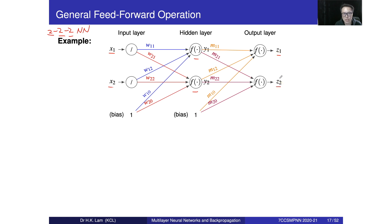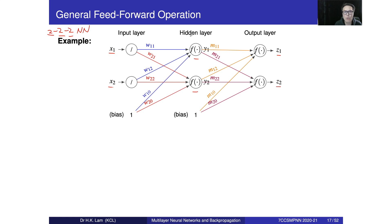When you look at the structure of this 2-2-2 neural network, between the input layer and hidden layer we have all the connections — we call this a fully connected neural network. The hidden layer and output layer are fully connected as well, meaning all inputs have a link to the hidden layer, and all hidden nodes have a link to the output layer.